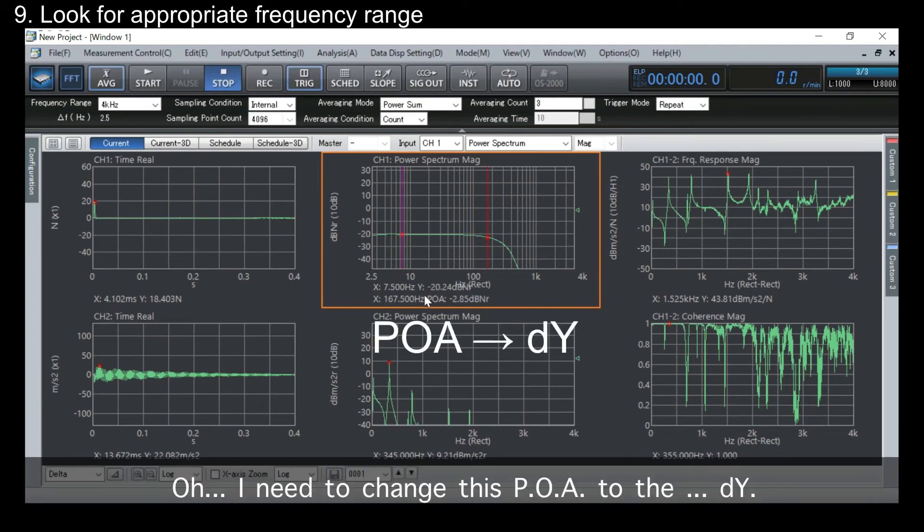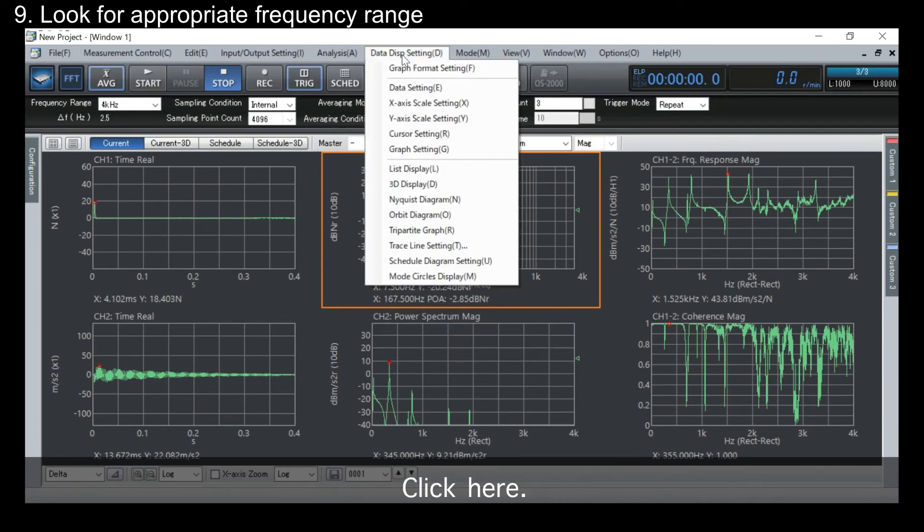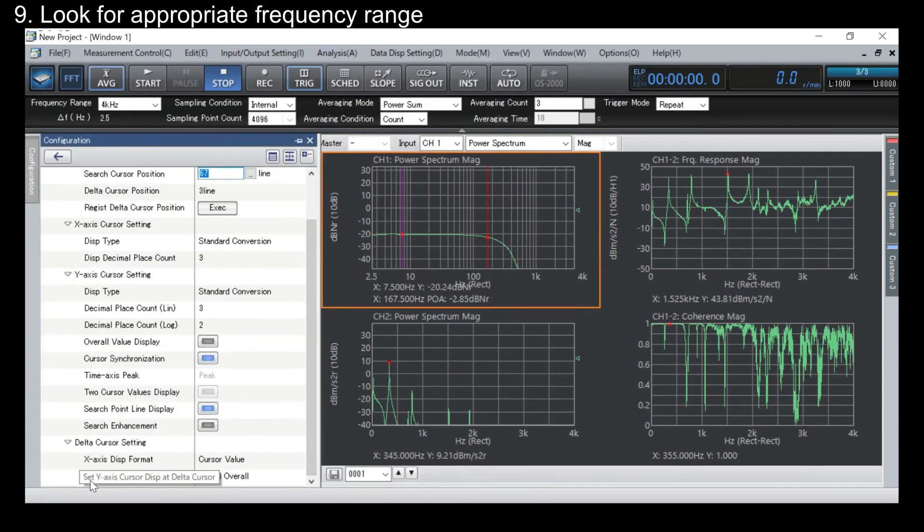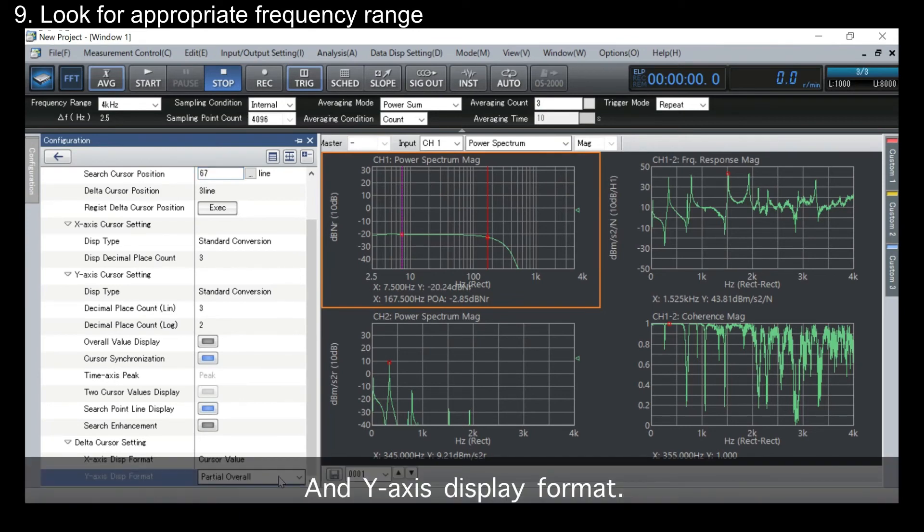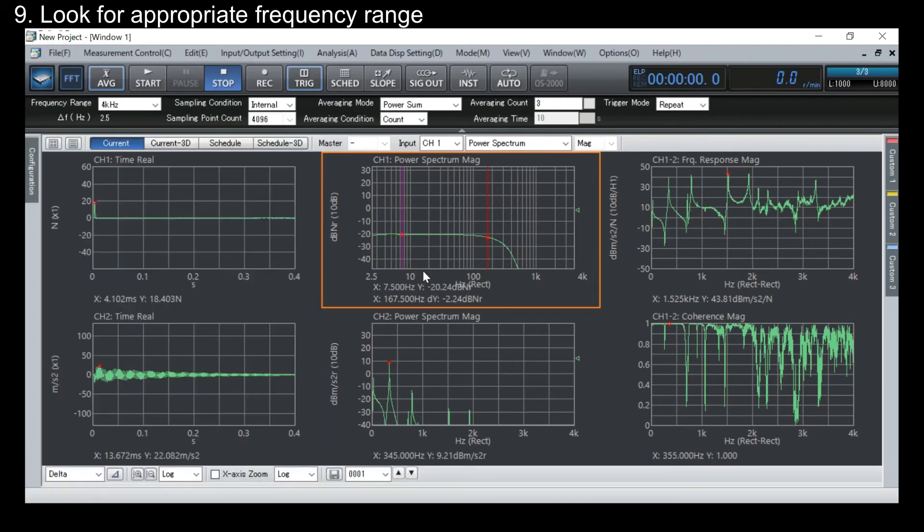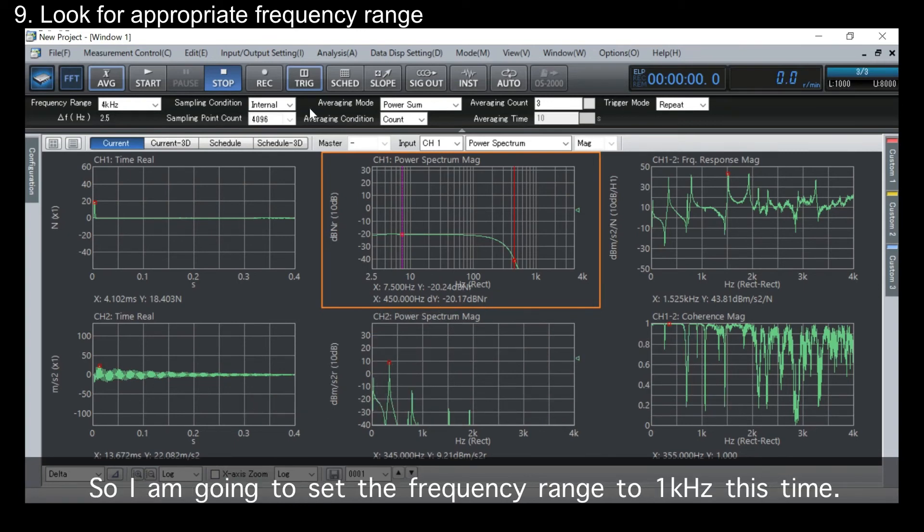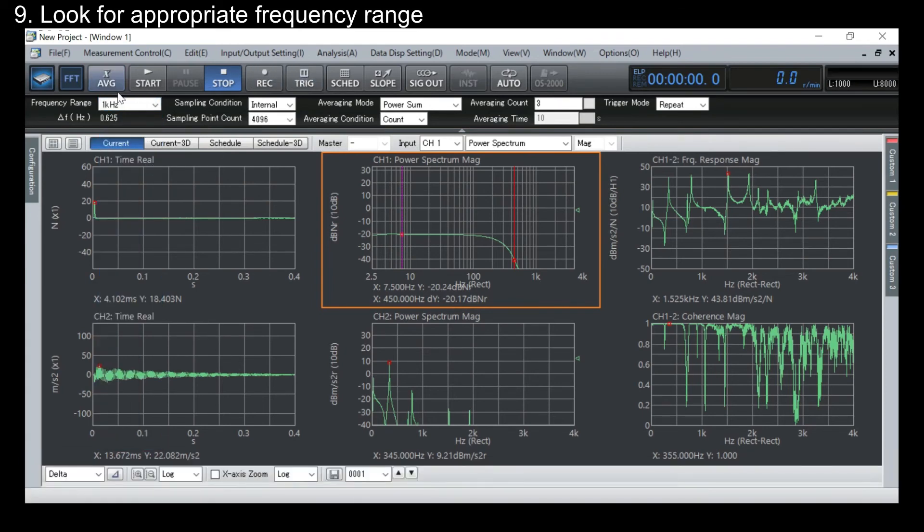Oh, I need to change this cursor overall to the delta y. Click here. Press the setting. And Y-axis display format. Change to this. And let's see the delta x here. It is the upper limit of the frequency that can be excited. So, I'm gonna set the frequency range to 1 kHz this time.